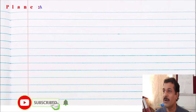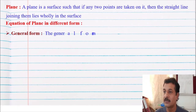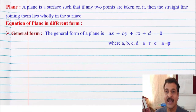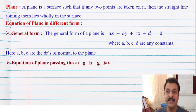Also you have to remember the plane. The equation of a plane is Ax plus By plus Cz plus d equal to zero, where A, B, C, and D are any constants.